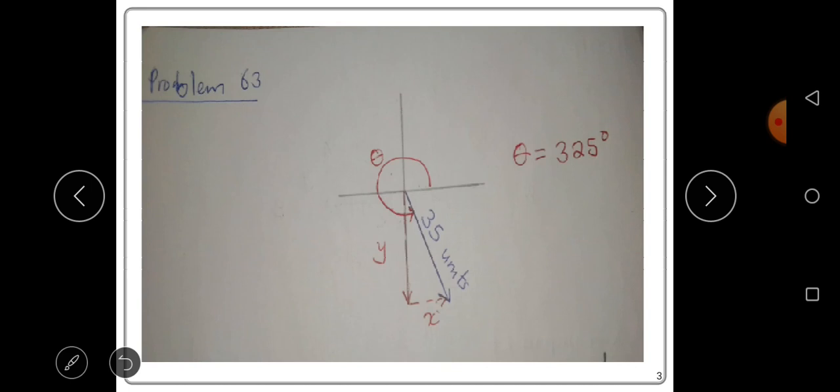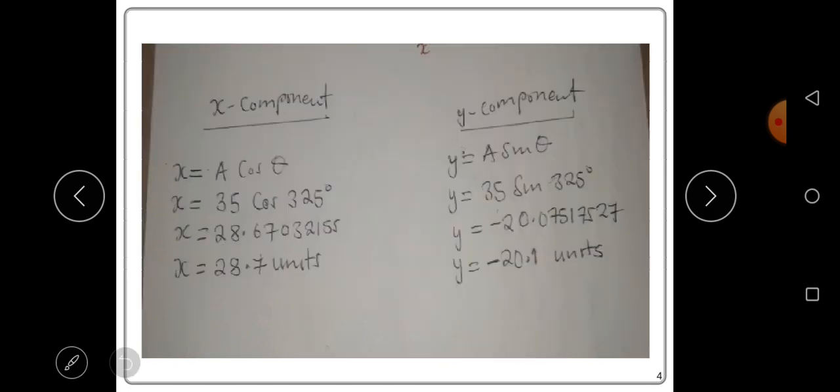To find the x-component, you use the formula x = A cos θ. A is the magnitude of the vector, which is 35 units, and θ is the angle, which is 325 degrees.